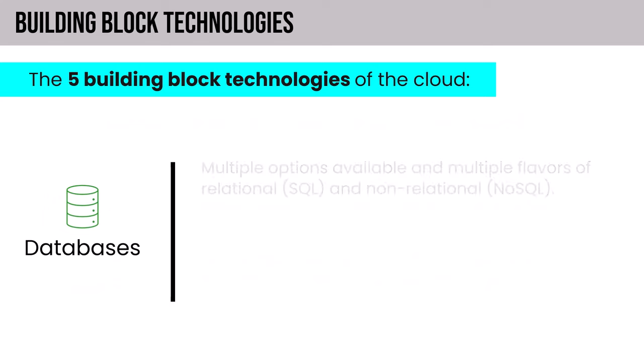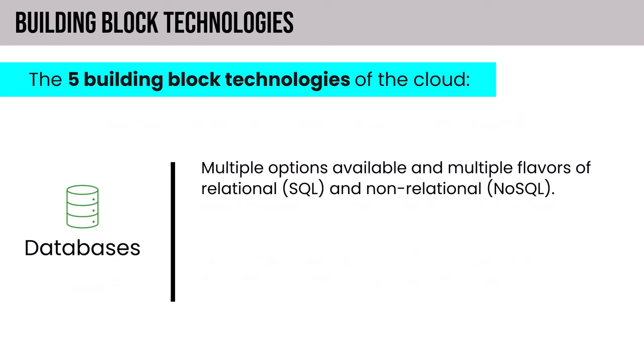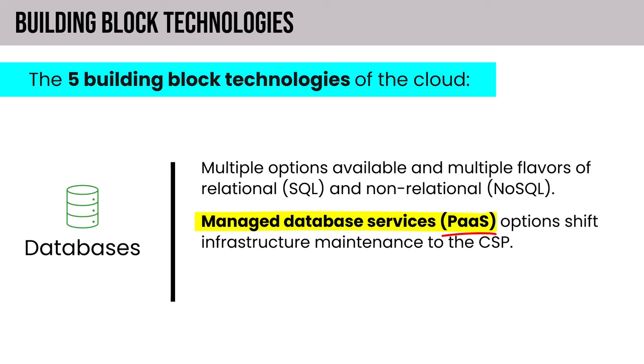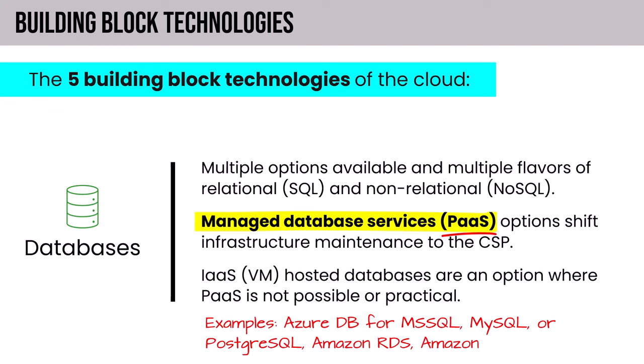Multiple database options are available — relational and non-relational. Managed database services, or PaaS options, shift infrastructure maintenance to the cloud service provider. There are also IaaS-hosted databases where PaaS is not possible or practical. On the PaaS side, examples include Azure DB for Microsoft SQL, MySQL, and Postgres flavors; on the Amazon side, Amazon RDS and DynamoDB. PaaS is generally preferable, but IaaS database options appear where customers have isolation or compliance requirements that make PaaS impractical.